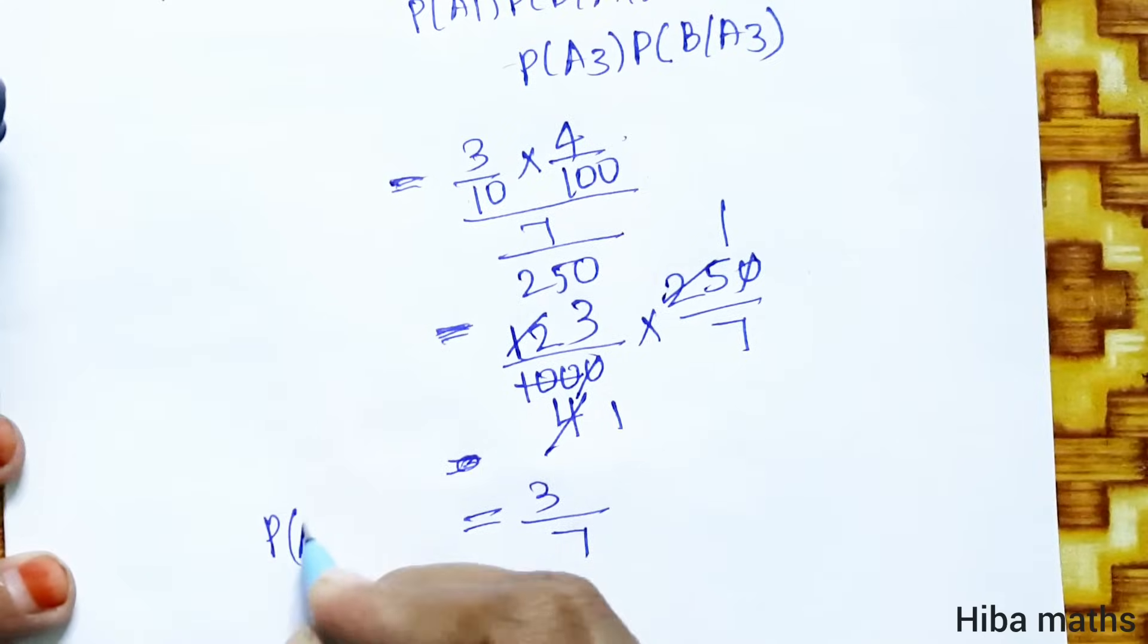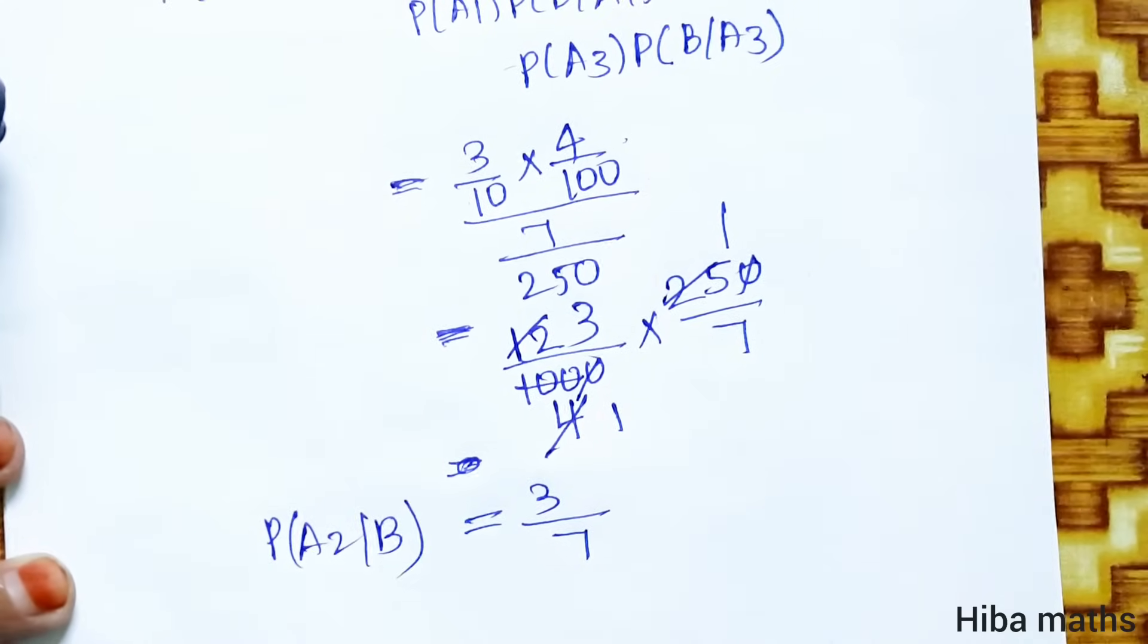This is P of A2 by B value. Understand the sum. Thank you so much for watching.